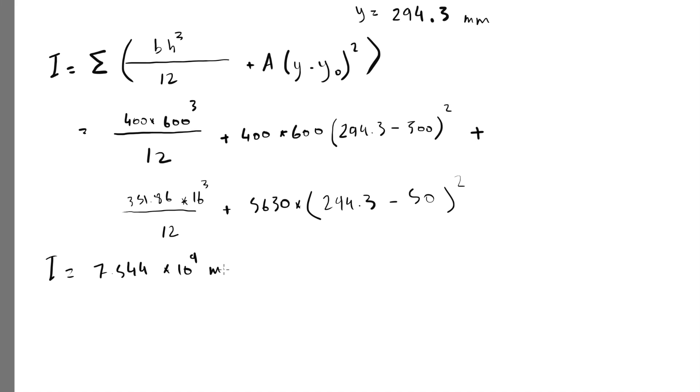Now this is the second moment of area for the shape. As you know, f = Mc/I, so leaving M alone, M = f × I / c. f is tensile strength of the concrete in bending.